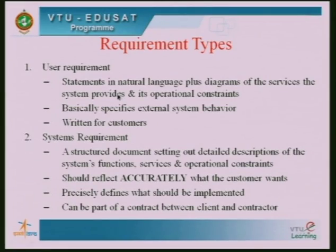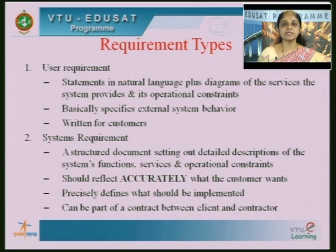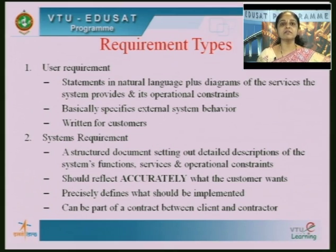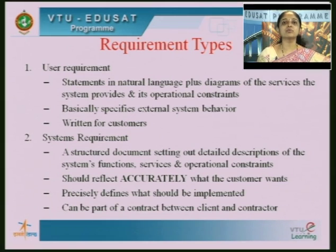User requirements are statements generally written in natural language, with diagrams or illustrations, describing what services the system should provide and the constraints on its operation. This provides an explanation of the external behavior of the system — how the system should behave externally when the user is using it. User requirements are generally written for the customers — those who are going to take the software or who want the software developed.